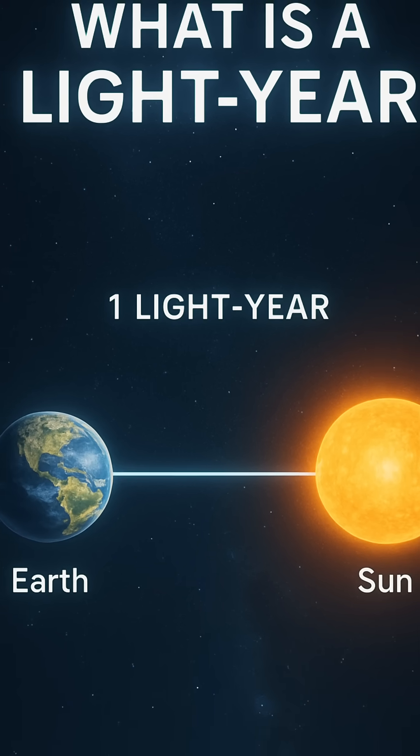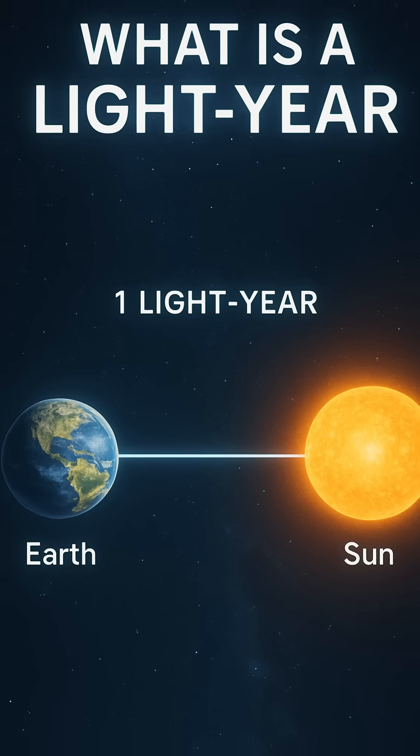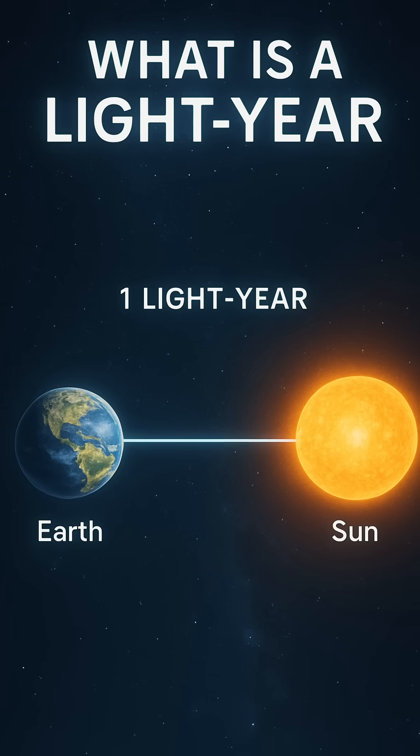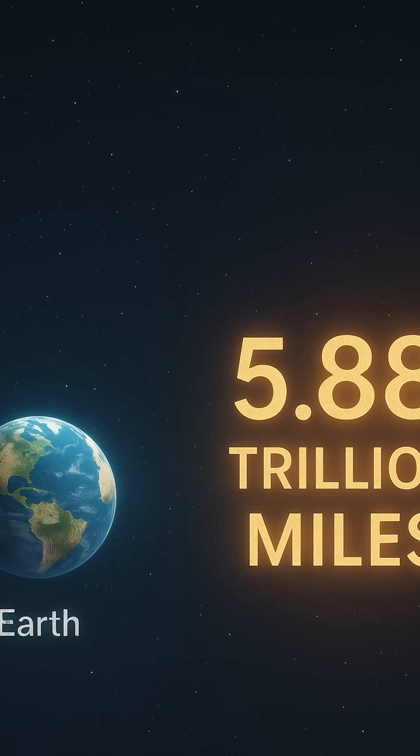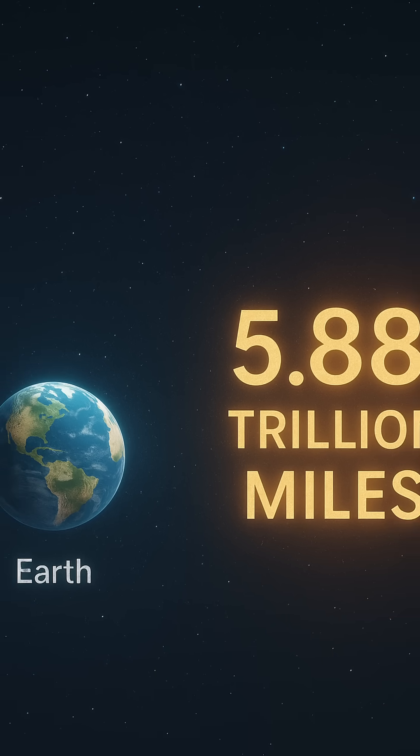Despite the name, a light year isn't a measure of time, it's a measure of distance. One light year equals the distance that light travels in one Earth year, about 588 trillion miles, or roughly 9.46 trillion kilometers.